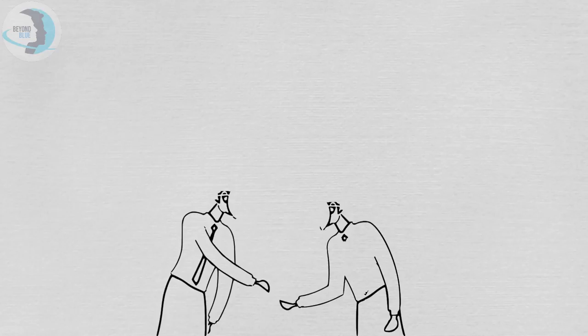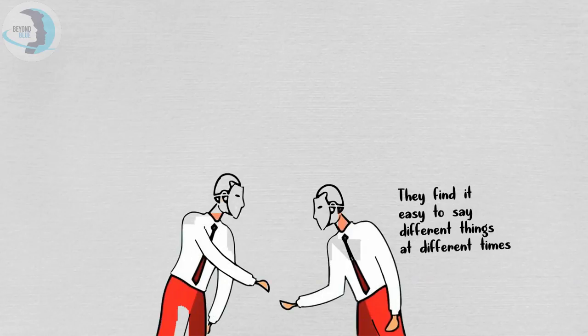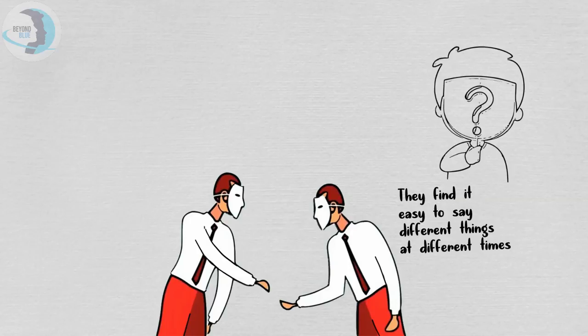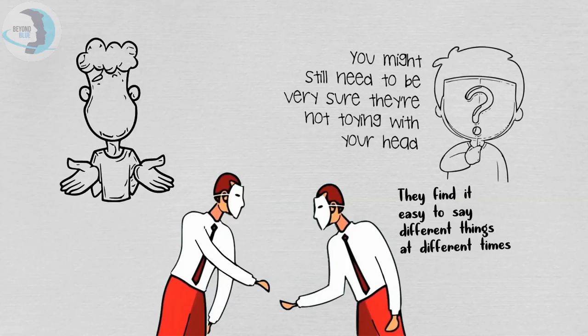Number two: they are extreme liars and cunning. Psychopaths don't care about anything or anyone else except themselves. They find it easy to say different things at different times about one subject matter. They're very dishonest in their way of lifestyle. There's nothing about them that's true, and even if they happen to tell you the truth you might still need to be very sure they're not toying with you.